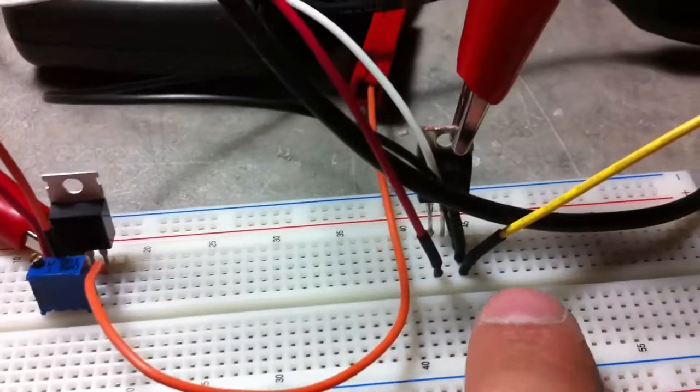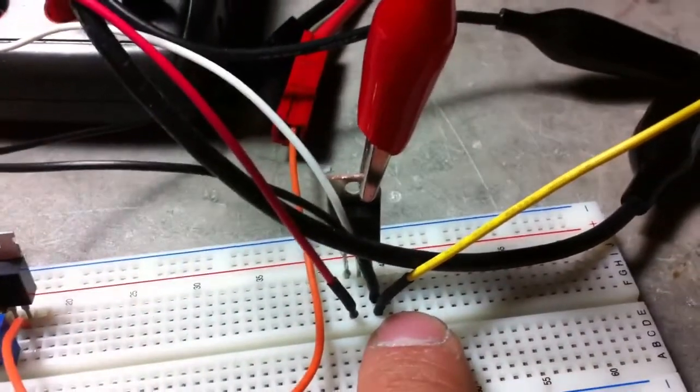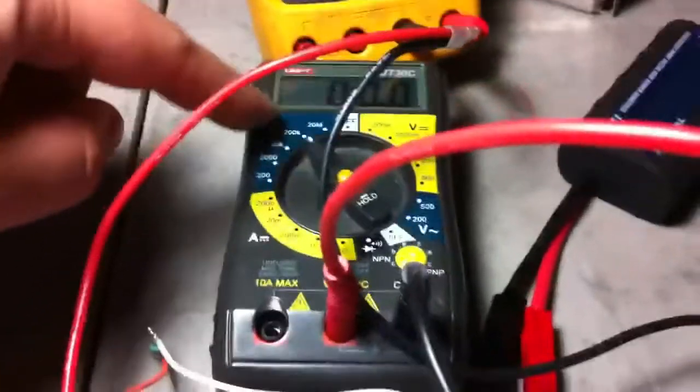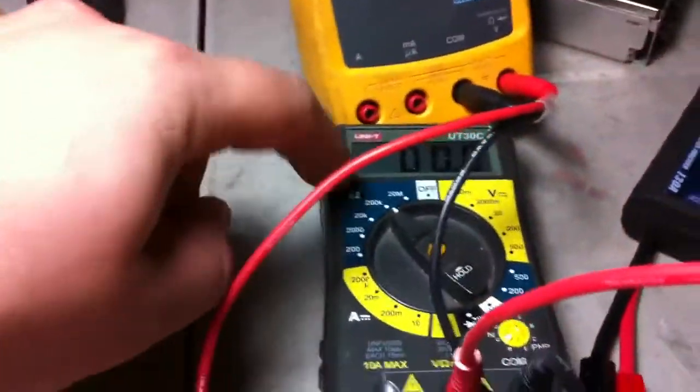Then there's a negative wire here which connects to the multimeter. It connects to both multimeters - this one measures the resistance of the MOSFET, and this one measures the voltage.